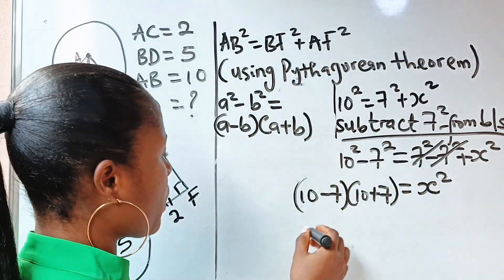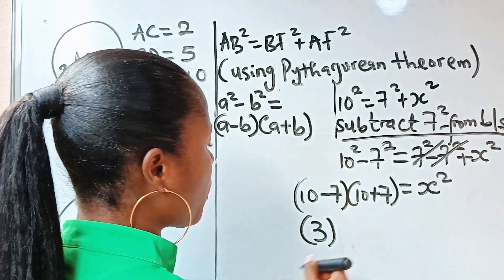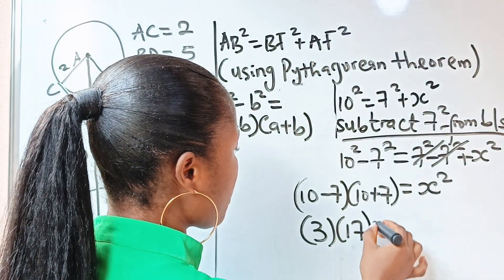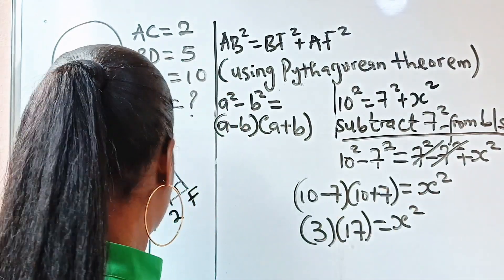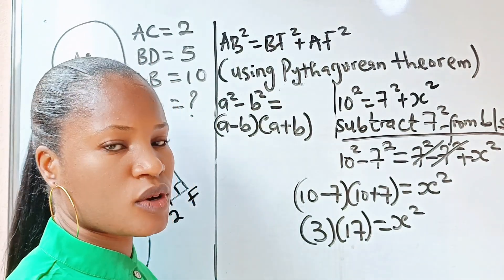Now 10 minus 7 will give us 3, and 10 plus 7 will give us 17, is equal to x squared. So let's solve for that: 3 times 7 is 21.